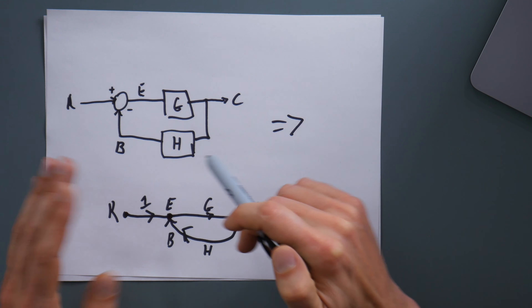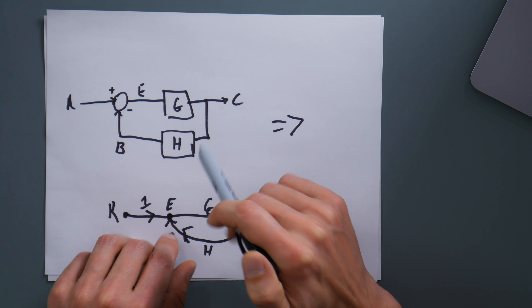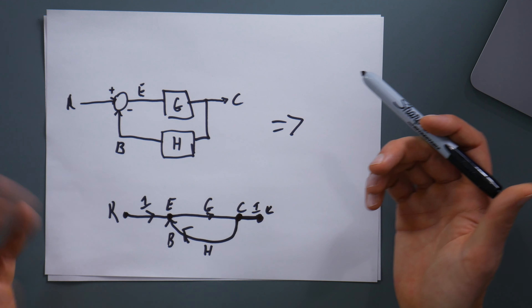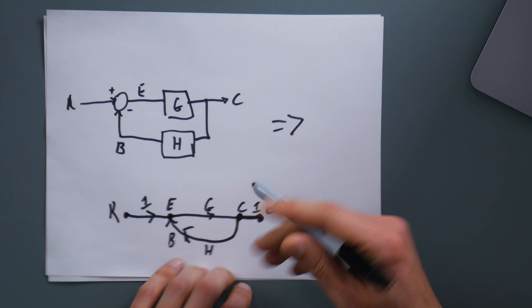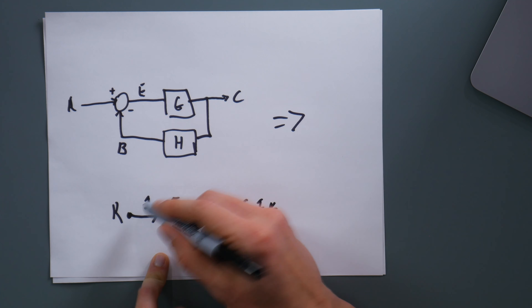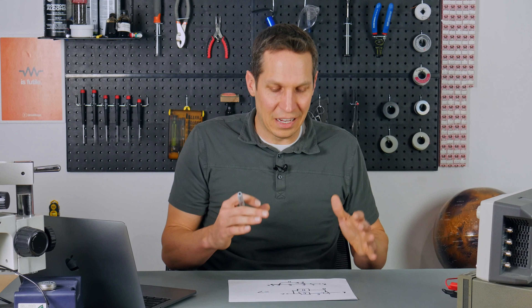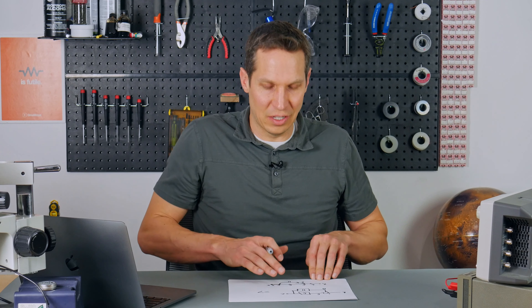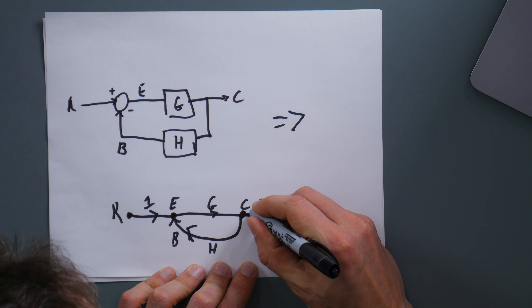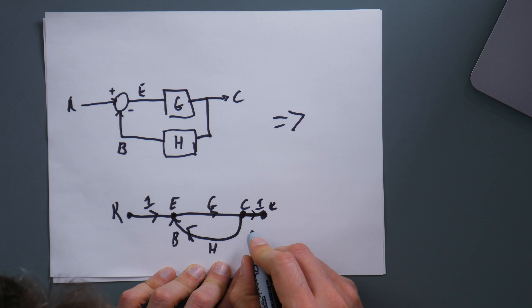Some key terms we need to discuss are primarily the input node and the output node. The input node is the only node that has only outputs, and the output node is the only node that has only inputs. A unity gain is added at the end so that the last node is technically an output node — otherwise it has both an input and an output in the feedback loop. That unity gain makes it possible to call this the output node, while the starting point is the input node.